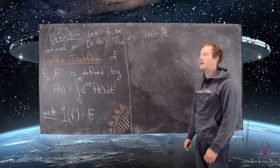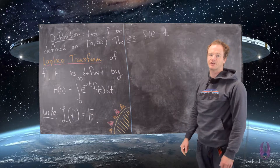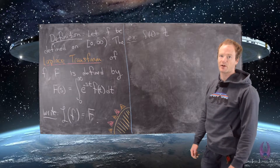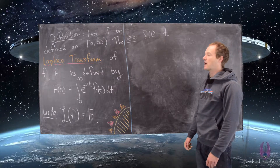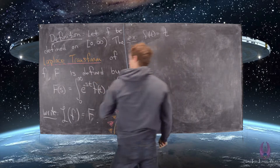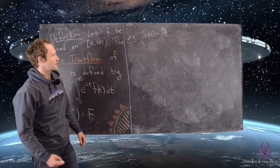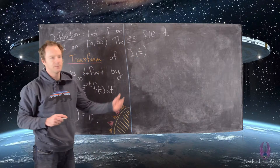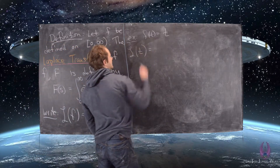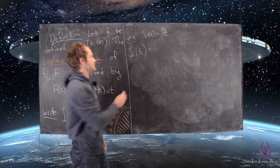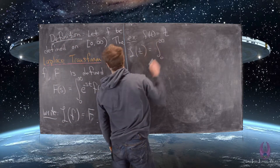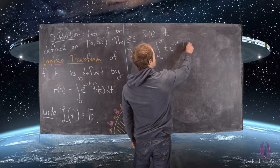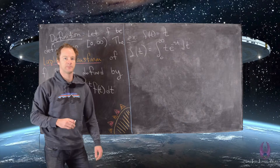The next example is the Laplace transform of f of t equals t — the next simplest after f of t equals one. Throwing it into the definition, we have L of t equal to the integral from zero to infinity of t times e to the minus st dt.